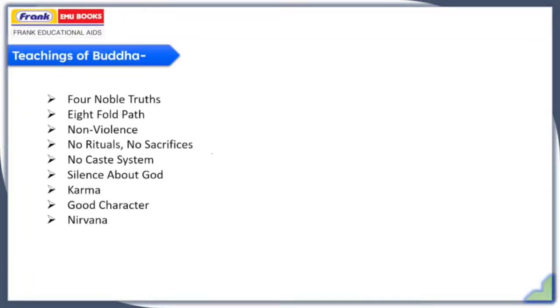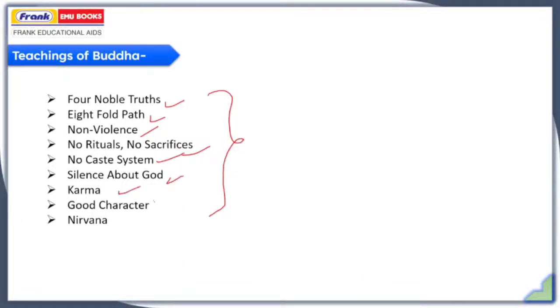The teachings of Buddha include the four noble truths, the eightfold path, and non-violence. He taught no rituals, no sacrifice, and believed in no caste system. He thought that silence about God is the most important approach. He also believed in karma and good character, and he believed in nirvana.